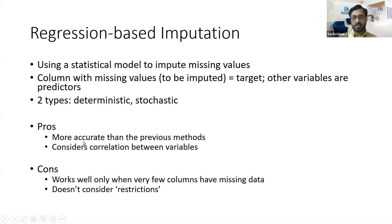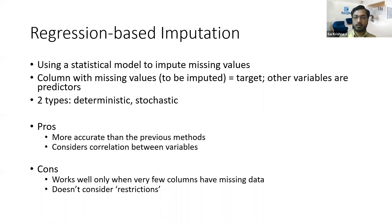The advantage is that it is more accurate than the previous methods and it considers the correlation or interaction effect between the variables, since regression models y as a function of x. The disadvantage is that it works well only when very few columns have missing data. For example, if you have six columns and only one needs imputation while the remaining five have clean data, this method works. But if those other columns also have missing data, it doesn't work very well, because those other variables form the backbone of the regression.